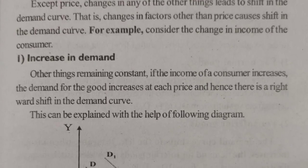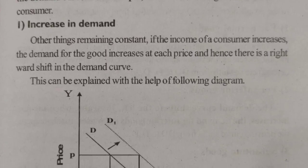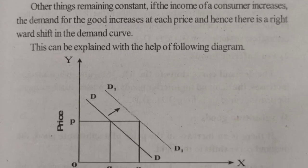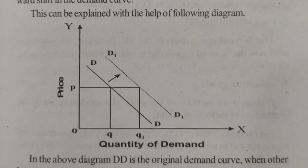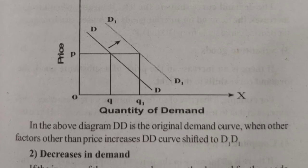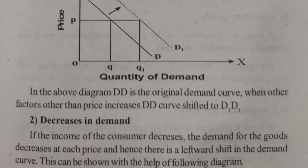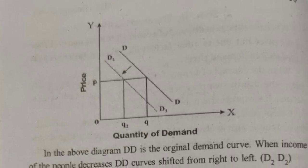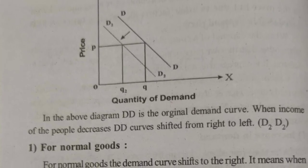Recall that when price decreases demand increases, and when price increases demand decreases. But in a shift in demand curve, the price may be good yet demand is less — for example because of taste and preference. If mango B has better taste than mango A even though A's price is good, consumers will choose B. So factors like taste, income level, and other preferences cause the shift.